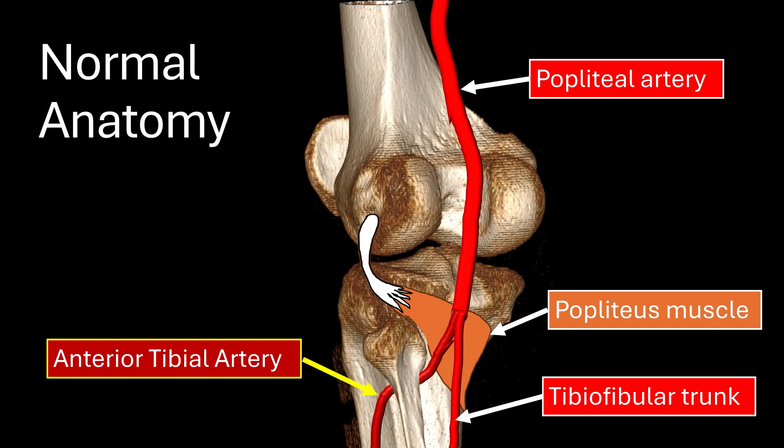But before we can dive into the variant, we first need to review the normal vasculature of the knee. We'll specifically focus on the popliteal artery and its branches. Here we have the normal situation — a knee from behind. We can see the popliteal artery coming down and then branching off into the anterior tibial artery, which runs between the tibia and fibula through into the anterior compartment. The popliteal muscle here is between the bone and the vessels. Then the second branch is the tibial fibular trunk, which further divides into the fibular and posterior tibial artery.